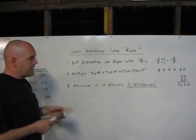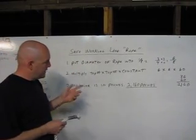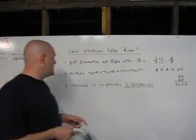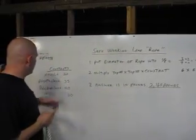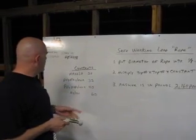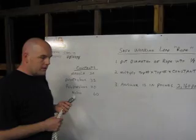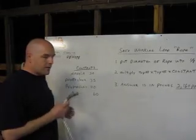The next step is you multiply the top number, which is six, by the constant of the rope. To find the constant, each rope has its own constant. Manila is 20, polyethylene is 35, polypropylene is 40, and nylon, which we're using, is 60.